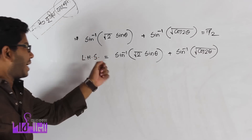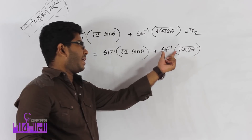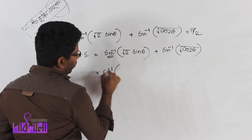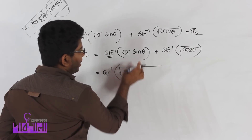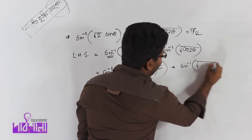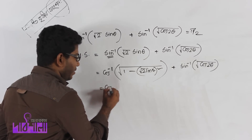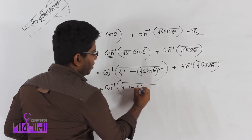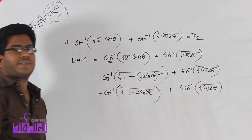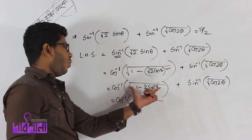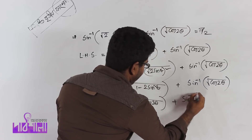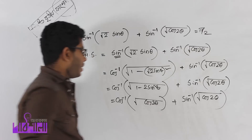There is a problem — the left hand side is: sine inverse of root 2 sin theta, plus sine inverse of root over cos 2 theta. If we want to convert sine inverse to cosine inverse, we get: cos inverse of root over (1 minus 2 sin squared theta). Square it, and what comes out — keep that in mind.